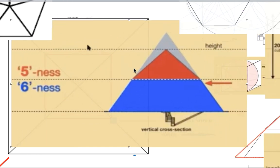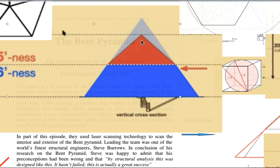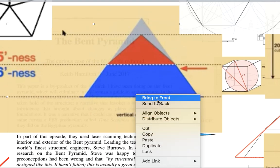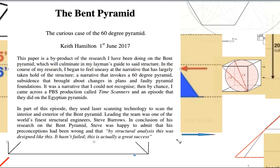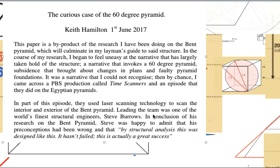Now, the thing you need to know is Egyptologists say the Bent Pyramid was a mistake. Okay, so let's bring this article to the front here. Okay, this is an article. Actually, Keith Hamilton's written three about the Bent Pyramid. This is called The Curious Case of the 60-Degree Pyramid. I'll put a link in the description. And he says here, he watched the PBS program with a structural engineer, one of the finest, Steve Burroughs. And Burroughs' conclusion about the Bent Pyramid, it was built exactly the way it was supposed to. It's a great success.